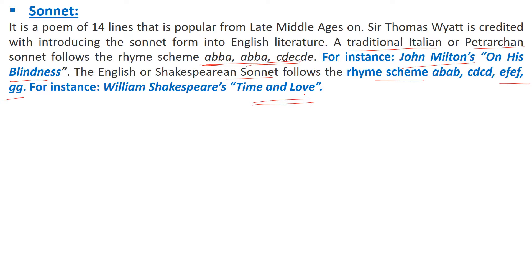Shakespeare wrote 154 sonnets overall in his literary career. In his sonnets he used three stanzas of four lines each and one couplet — the couplet ending with a GG rhyme scheme.